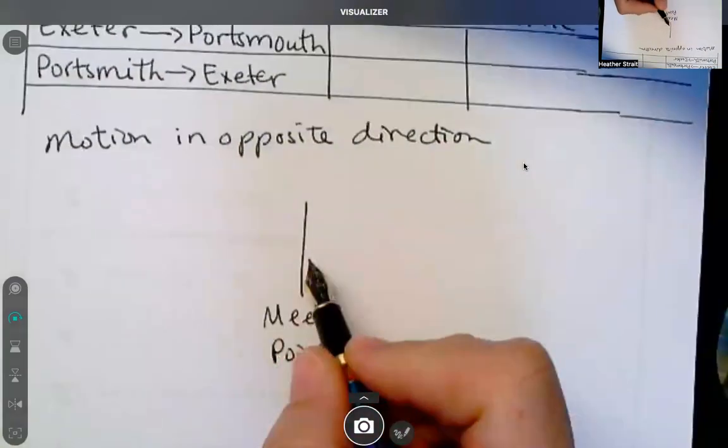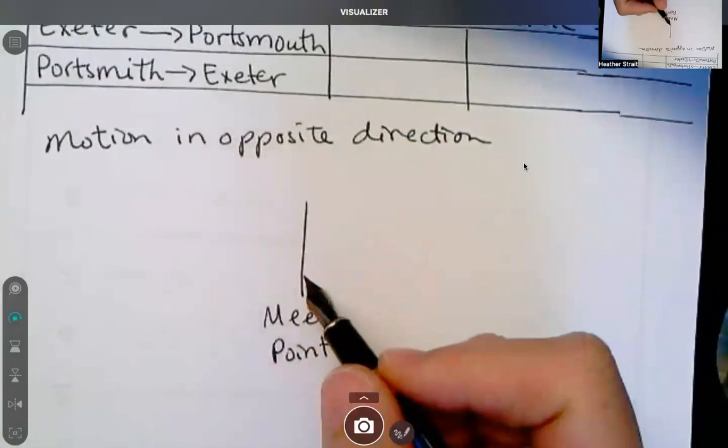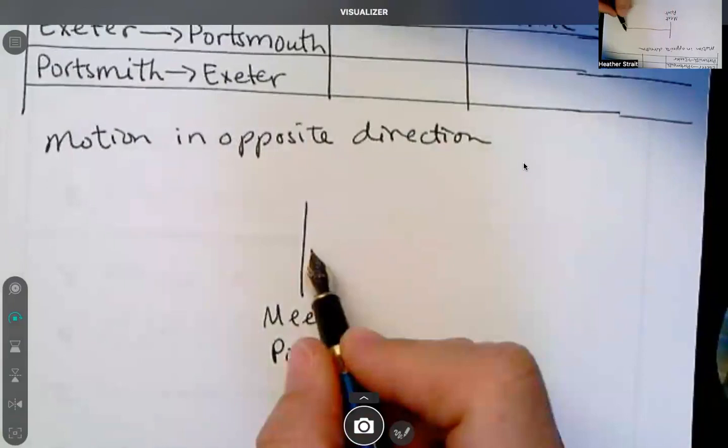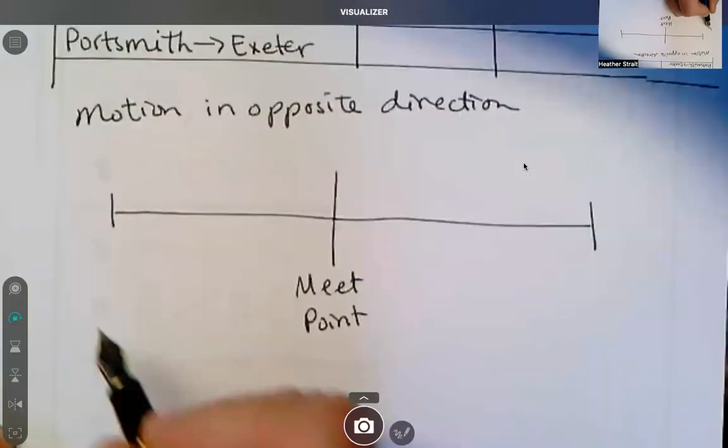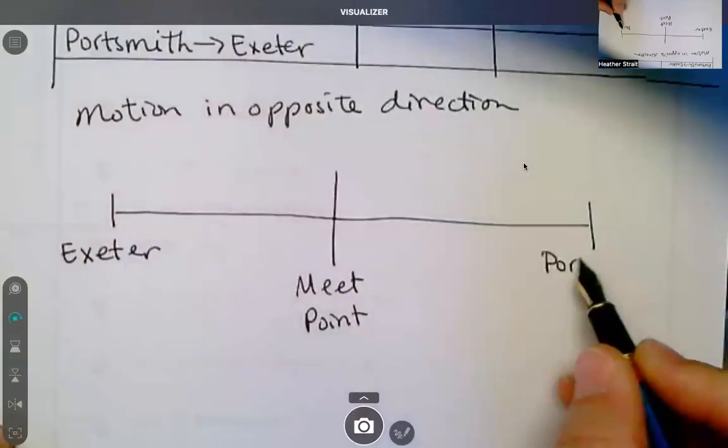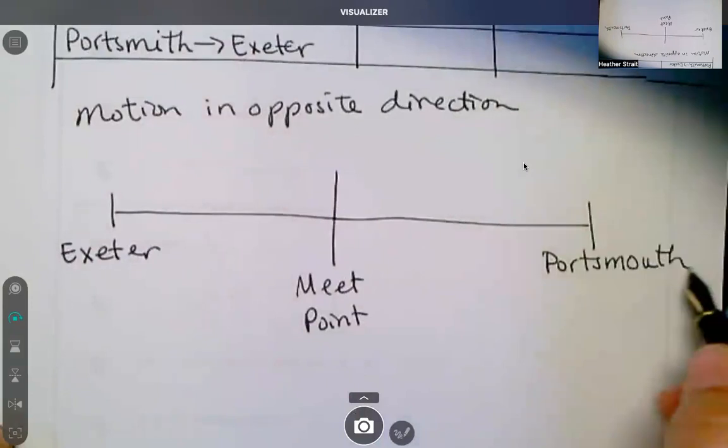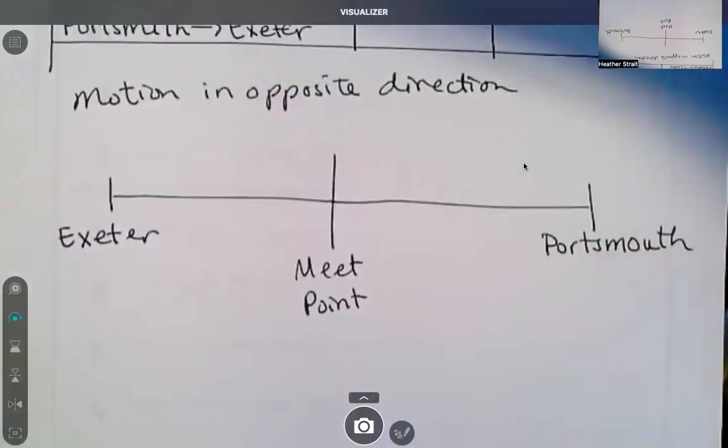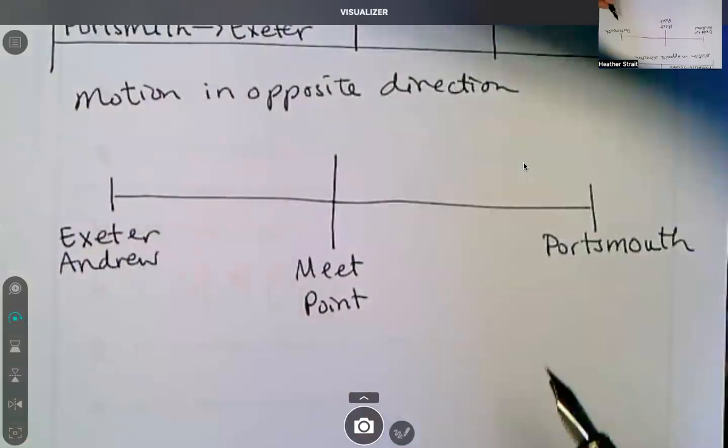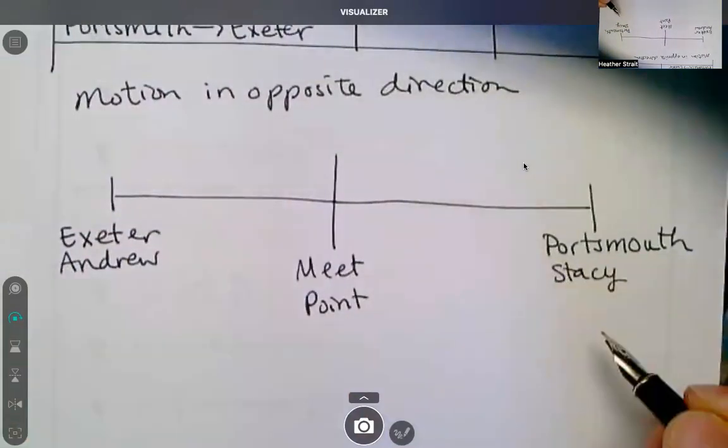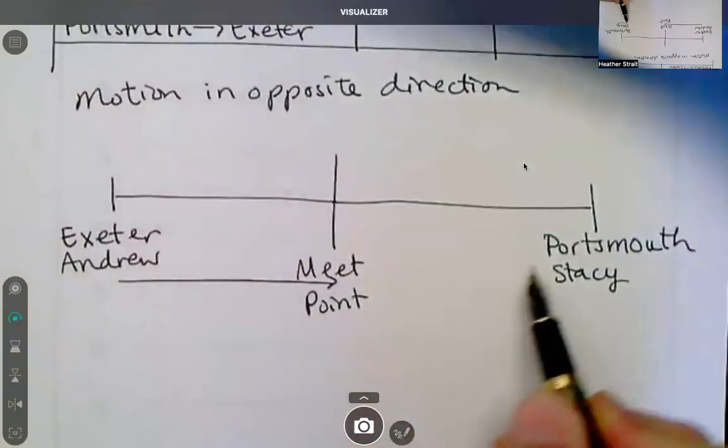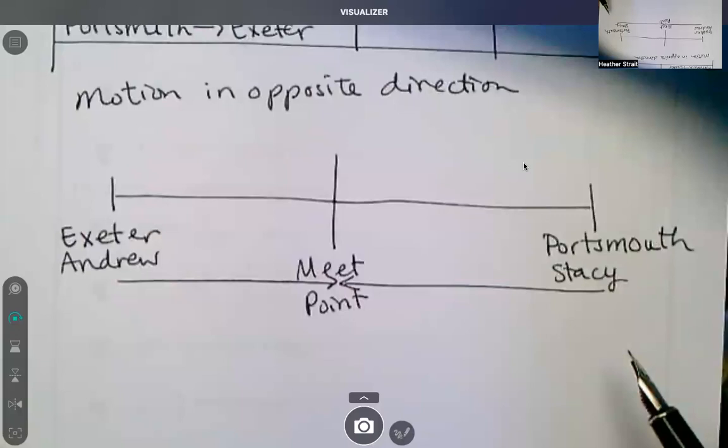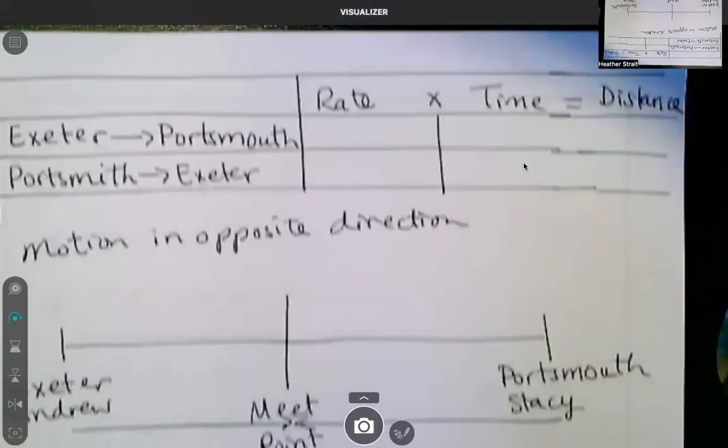And Exeter to Portsmouth. So I have no idea where these places are, whether one is east or west, who cares? Okay, so we got Exeter and Portsmouth, East Coast somewhere. All right. And who left Exeter? This is Andrew and Stacey. So Andrew is going there and Stacey is going in that direction. Okie dokie. There's my sketch.